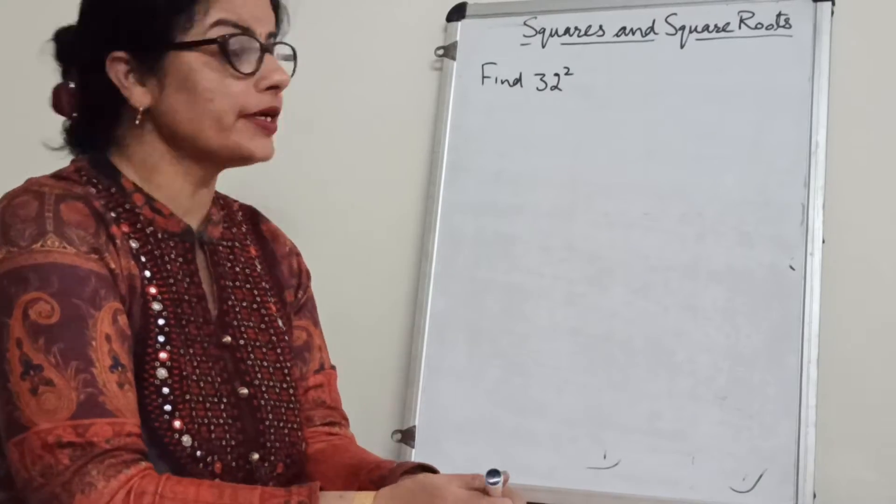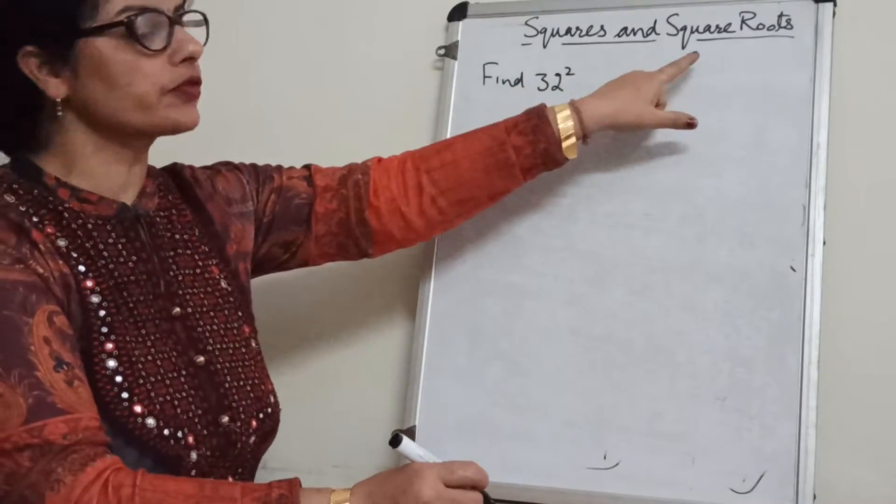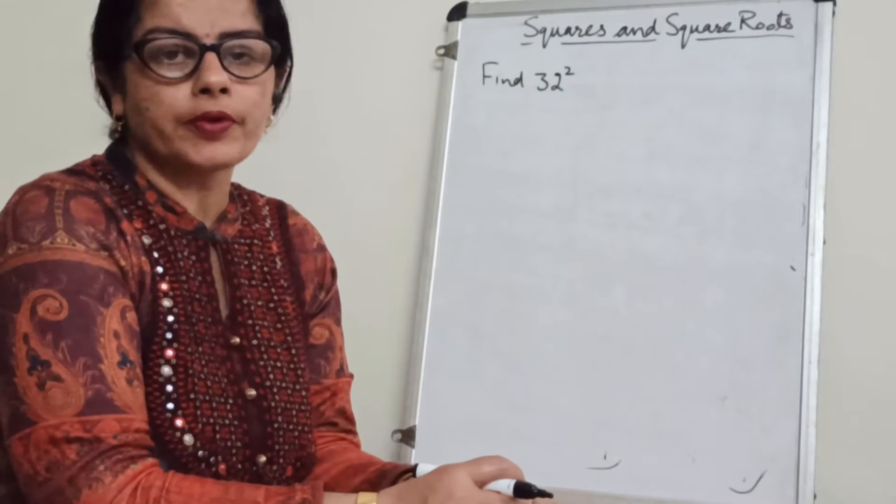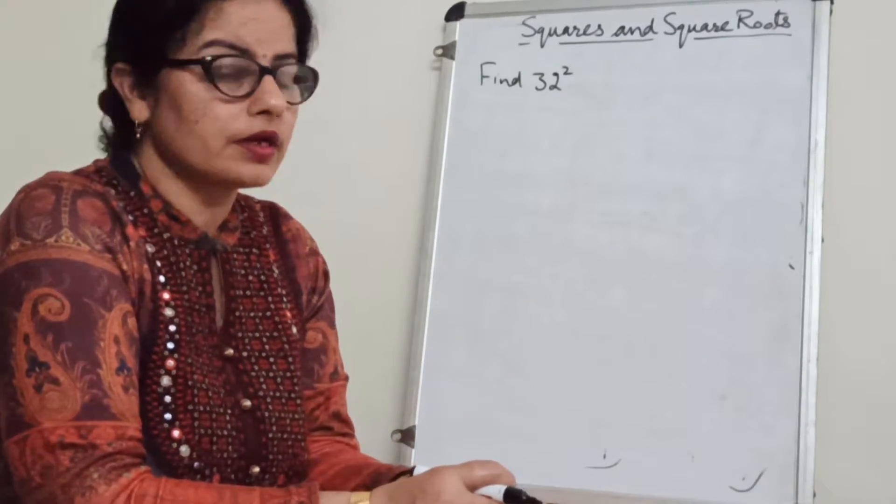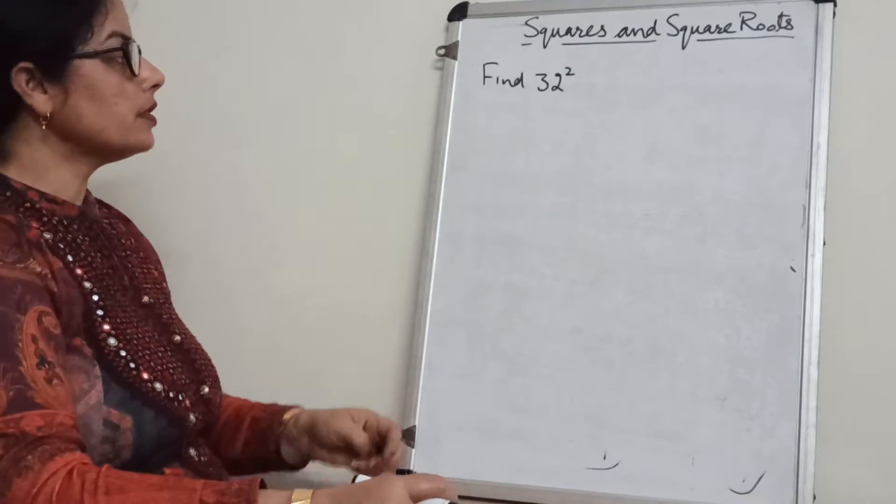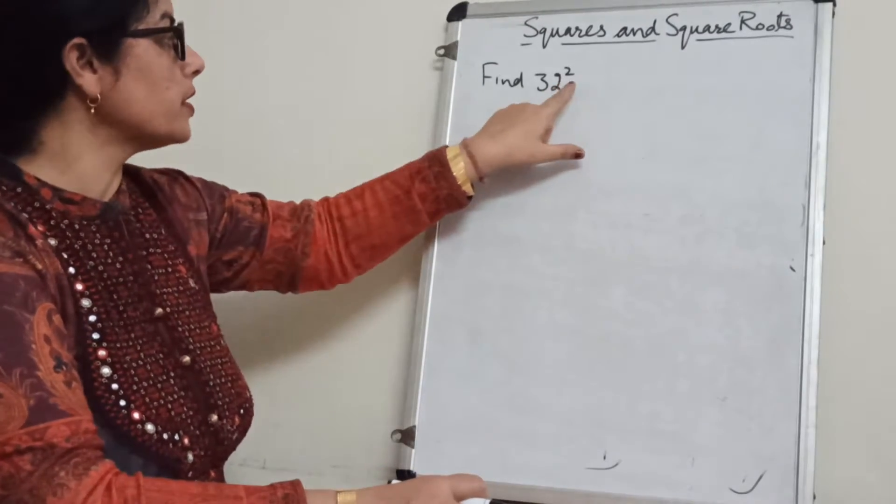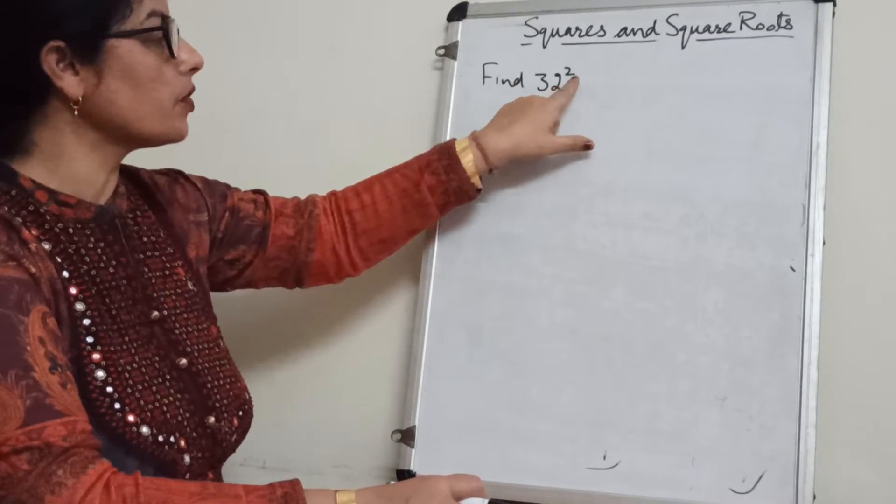Good morning students, yesterday we started the topic squares and square roots and I told you the properties related to squares. Today we will also do some related to squares as I want to find here square of 32.